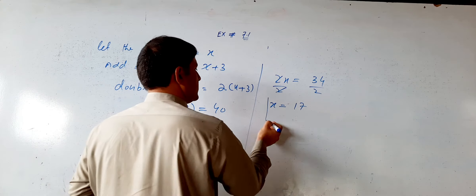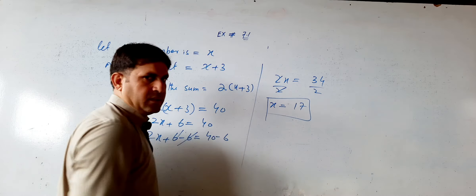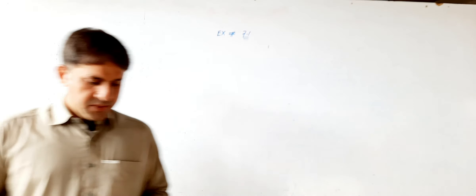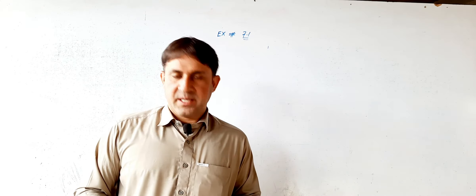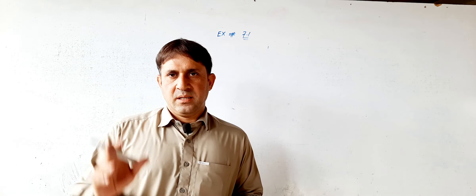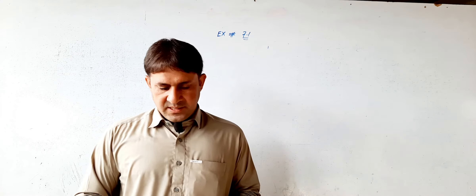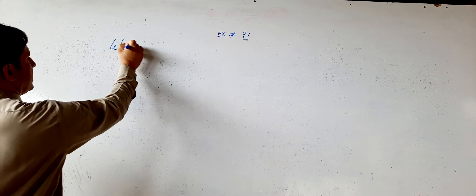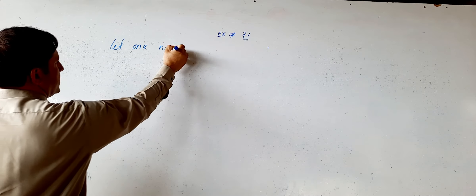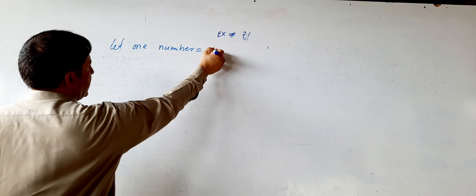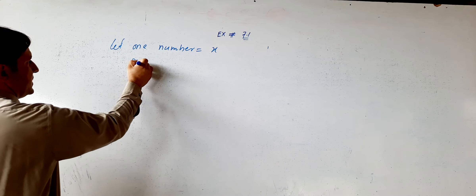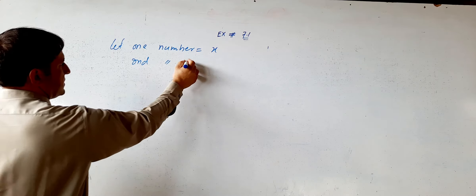So the original number is 17. Now moving to question number three: the sum of two numbers is minus four, and their difference is six. Find the numbers.